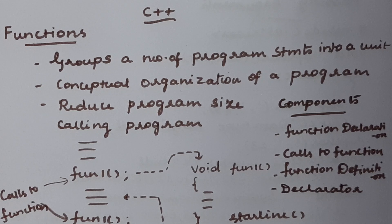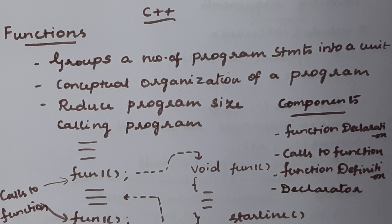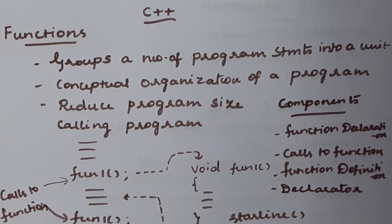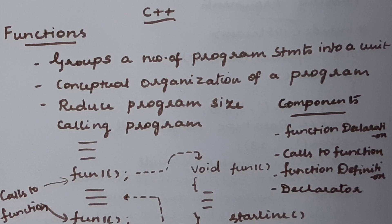Now, what is the structure of a function? How can we define and use a function in a program? The program that uses a function is said to be the calling program. A program that has functions is divided into two parts: one is the main function and another is the user-defined function. User-defined functions can be defined by the user — any name can be provided. These are different from predefined or library functions. Library functions are already defined and we can use them but cannot change them.